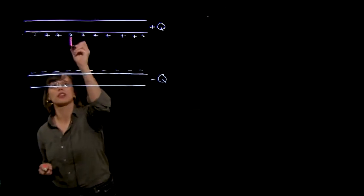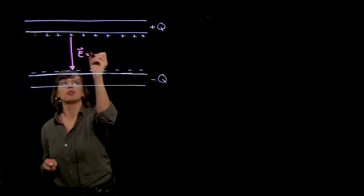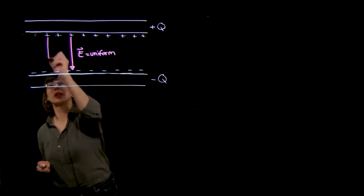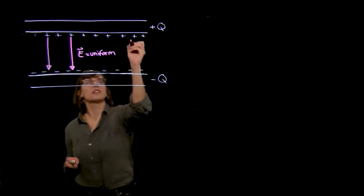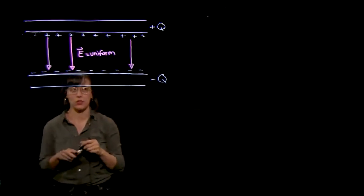We've seen that this establishes an electric field between the two plates that's uniform everywhere between the two plates. And in this approximation where we ignore edge effects, we'll say it's zero outside these two plates.